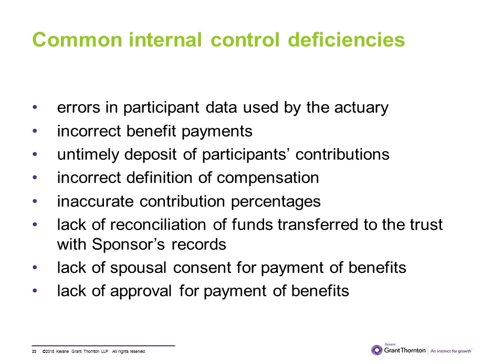We will now discuss the most common internal control and financial statement deficiencies to help you identify similar situations and implement corrective actions. Errors in participant data used by the actuary — such as date of hire, date of birth, and name — can cause miscalculation in actuarial computations, resulting in additional fees to correct errors. Another deficiency is incorrect benefit payments, which can also be caused by errors in participant data.